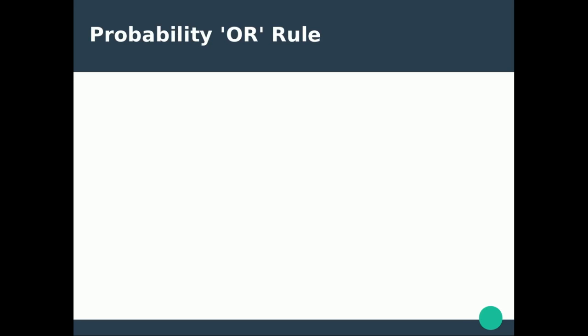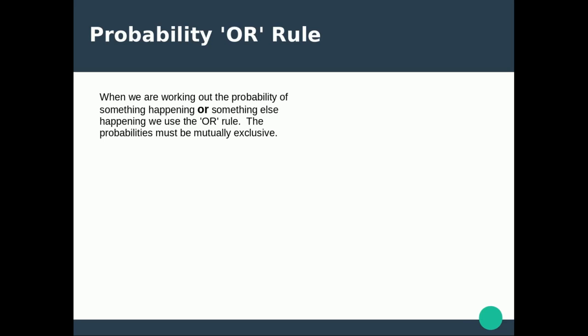So what is the probability OR rule? When we are working out the probability of something happening or something else happening, we use the OR rule. But the probabilities must be mutually exclusive - that means they can't happen at the same time.